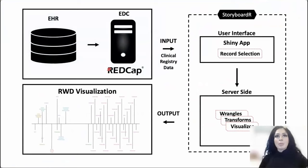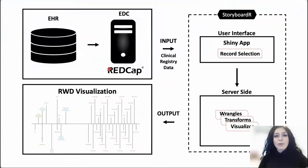In reality, it's a little more complicated because not only does it function as a standalone package, but it's also built as a Shiny application. The input of the Shiny application are clinical registry data captured in a structured electronic data capture system, and users interface with Storyboarder in a web browser. That's where they're able to control which patient's record they would like to create the interactive data visualization timeline for. The server side of the Shiny application executes the code of the R package, which then wrangles, transforms, and visualizes this clinical data as a Plotly interactive graph.